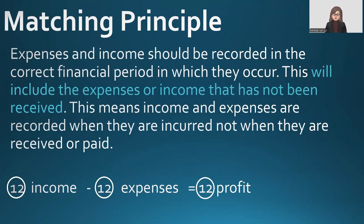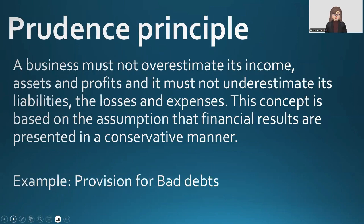You cannot have 13 months of income and 11 months of expenses — that's not going to give you 12 months of profit. So 12 months of income minus 12 months of expenses will give you 12 months of profit. This is where our adjustments come into play.